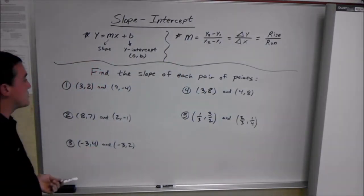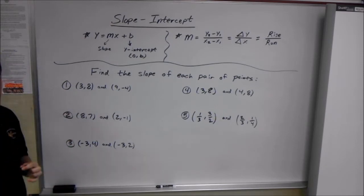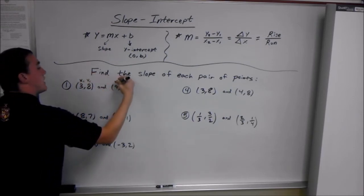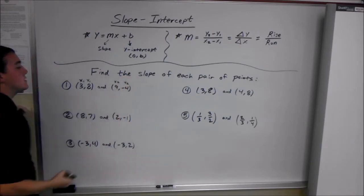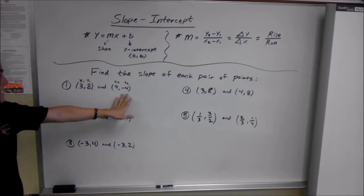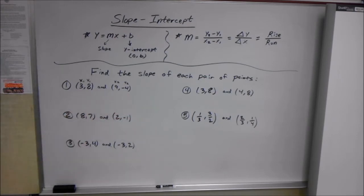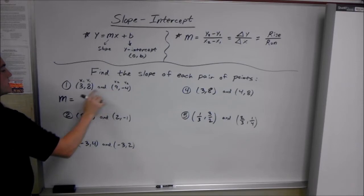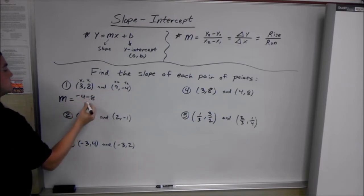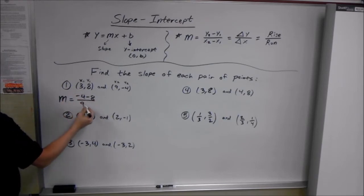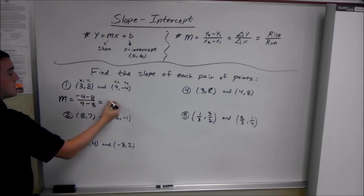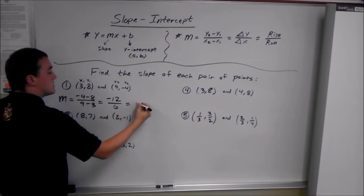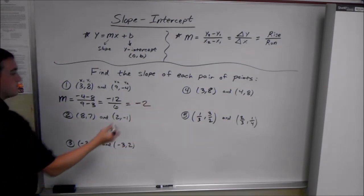We'll go ahead and do a few examples. You can just designate your points however you want — this could be x1, y1, x2, y2. It doesn't matter. We just plug that into our slope equation: m equals y2 minus y1, so negative 4 minus 8, over 9 minus 3. Negative 4 minus 8 is negative 12, over 6. Therefore, our m is negative 2 for the first set of points.